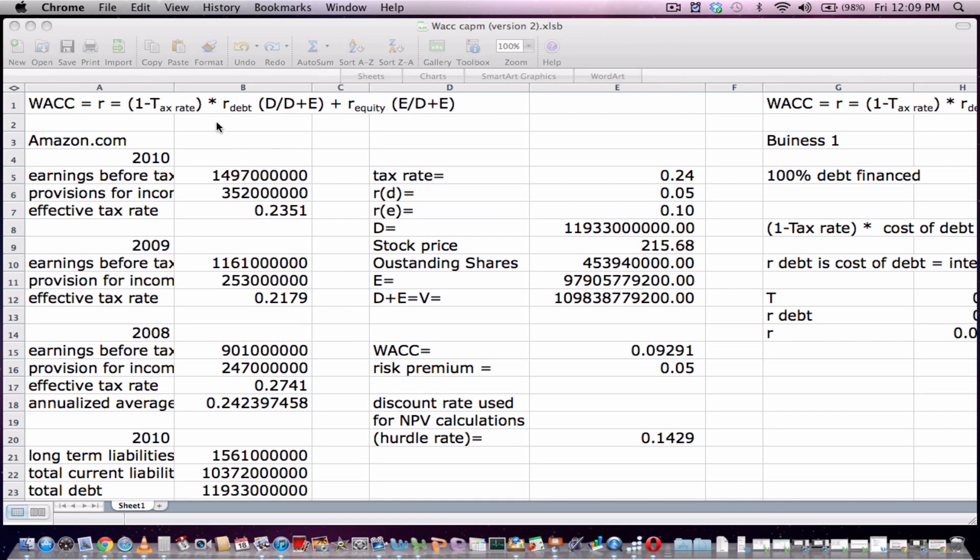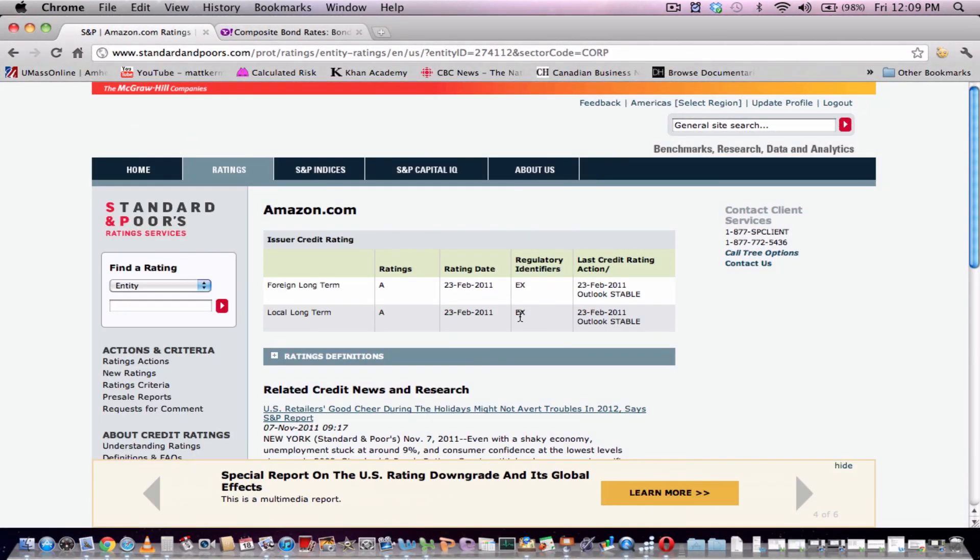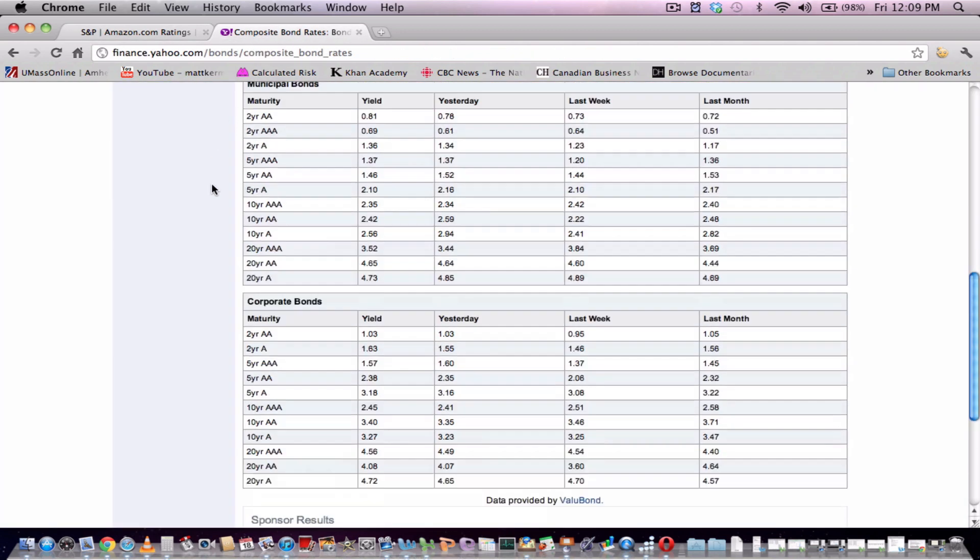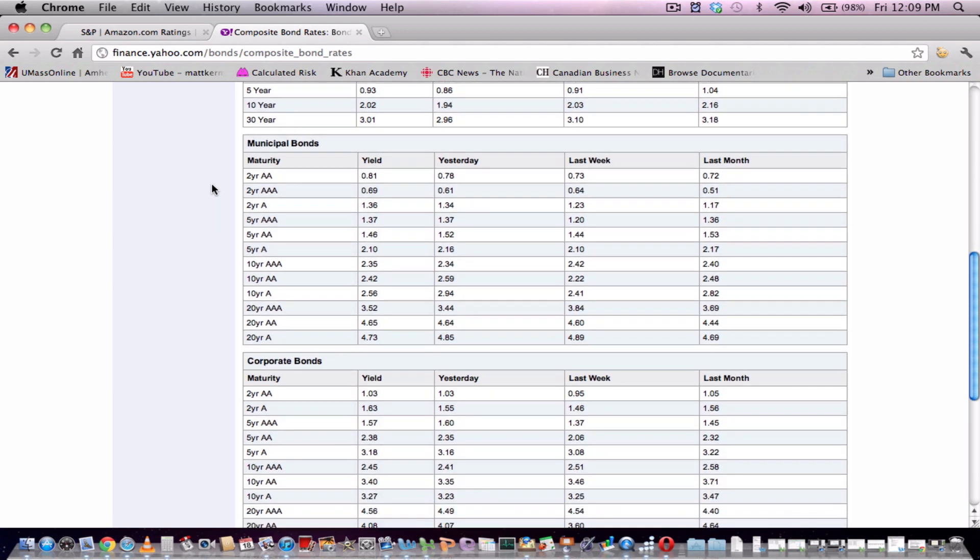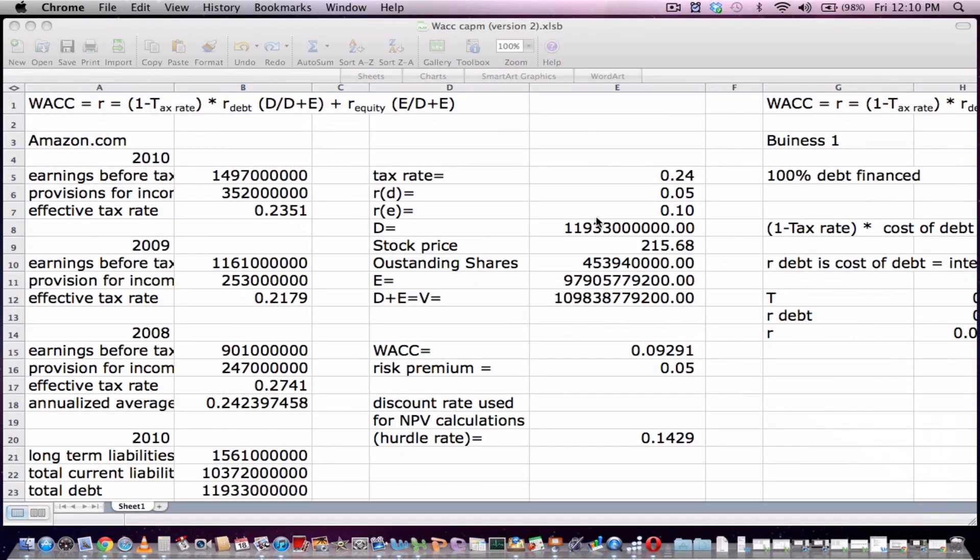Now we have to find their rate of debt or their cost of debt. To do so, you go to Standard & Poor's Rating Agency. You can see that their local long-term debt has a rating of A. And then go to Yahoo Finance, Composite Bond Rates. You can see the 20-year yield on corporate bonds is 4.72. So you add that in as our rate of debt.